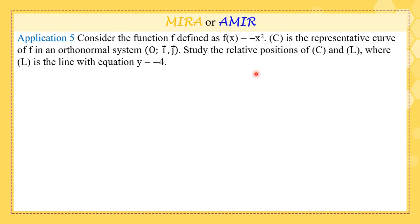We have a function f where C is the curve of x squared. We need to study the relative positions of C and the line l, where l has equation y equals -4.